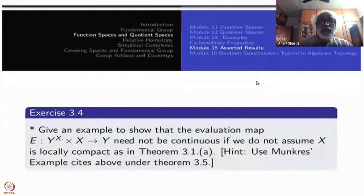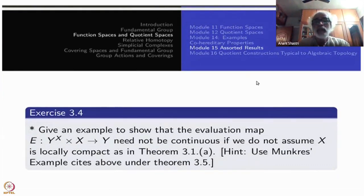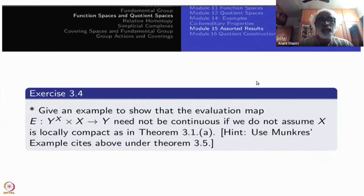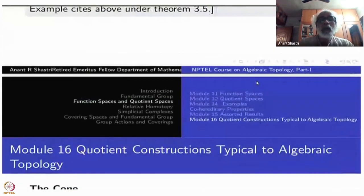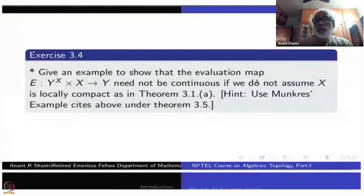This is a star exercise. This is only for people who are advanced, quite sufficiently advanced with point set topology. They will go through Munkres paper or maybe Michael's paper and so on. So then they will be able to prove this, solve this problem. Alright. So let us stop here. Thank you.